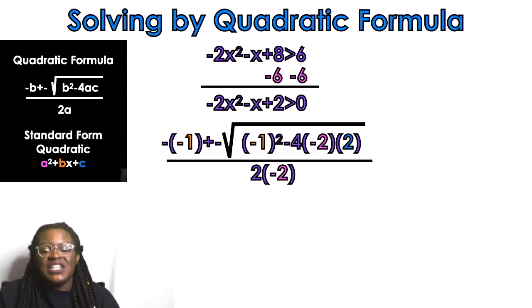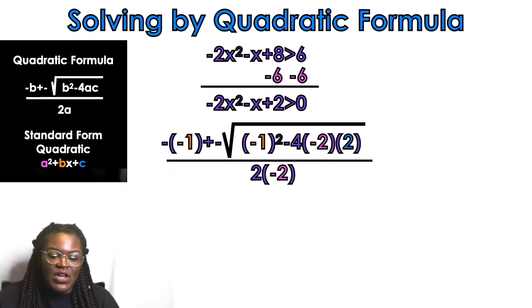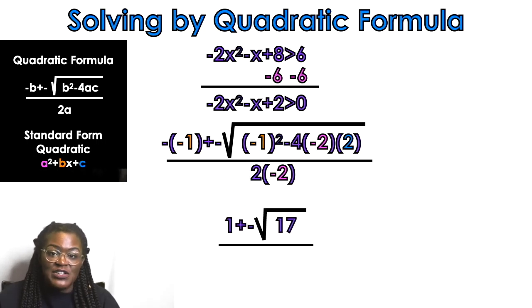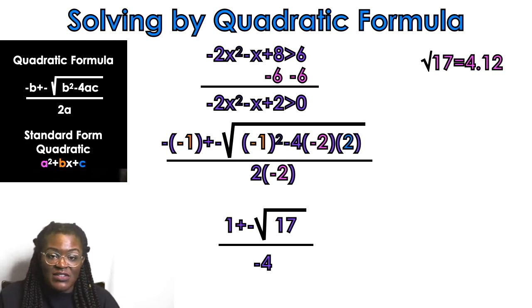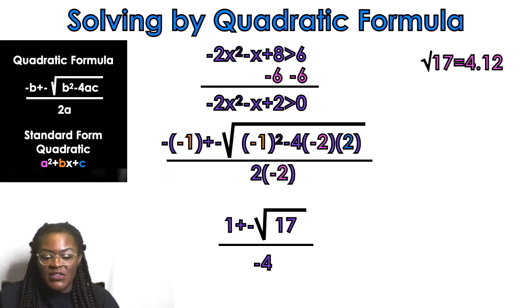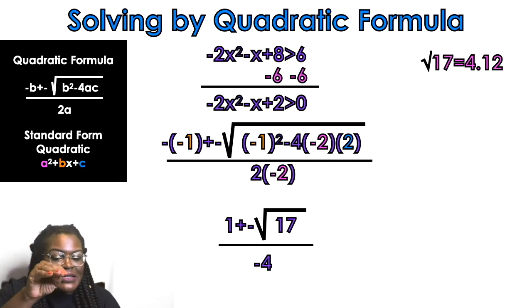This is just a PEMDAS situation — figuring out the order of operations under that radical: exponents first, then multiplication, then subtraction. When I simplify under the radical I get 17. Negative negative 1 turns into a positive 1. On the bottom, 2 times negative 2 is negative 4. The square root of 17 is approximately 4.12.